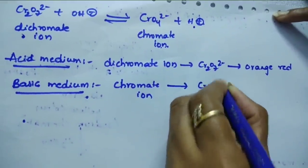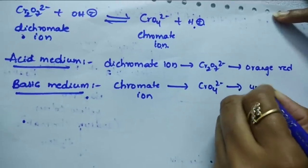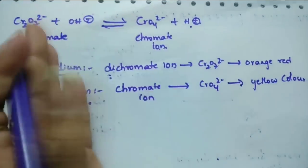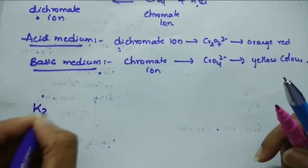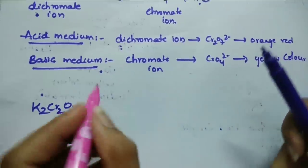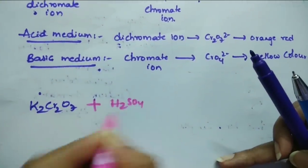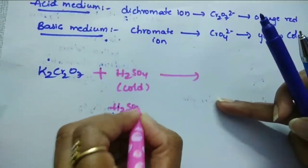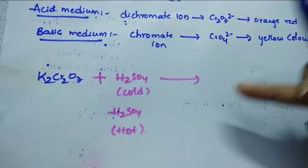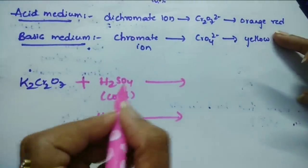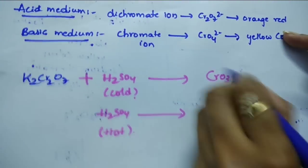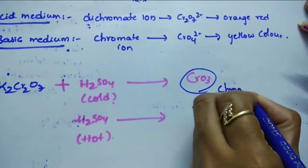CrO₄²⁻ is the chromate ion and it is yellow color. An equilibrium establishes between these two. K₂Cr₂O₇ reacts with H₂SO₄. With cold H₂SO₄ the product formed is chromic anhydride — very very important. With hot H₂SO₄, what are the products? These are the important reactions.